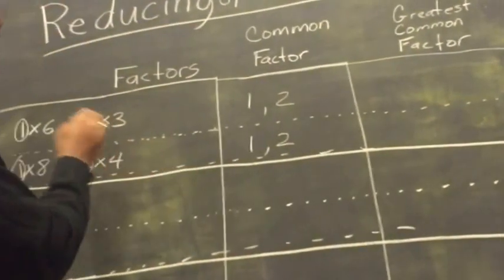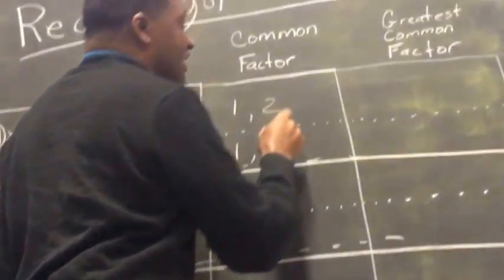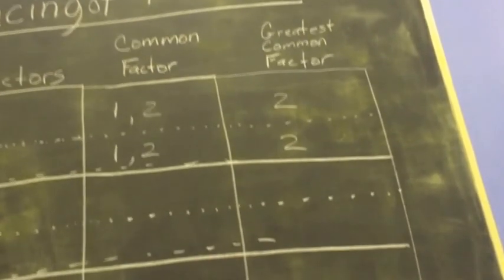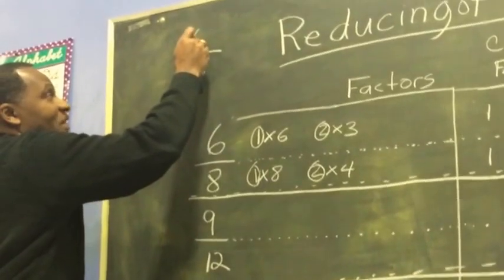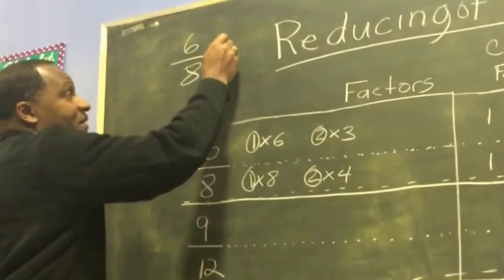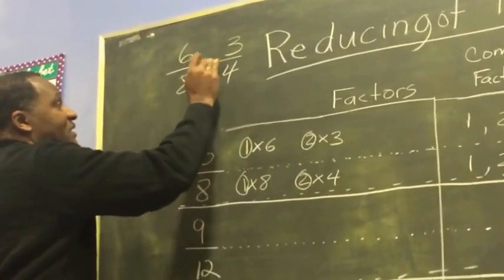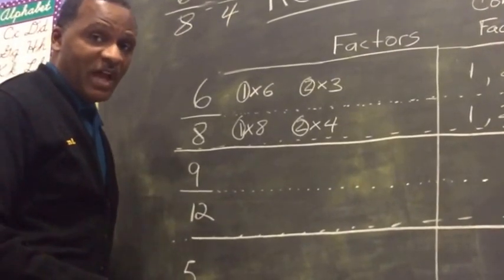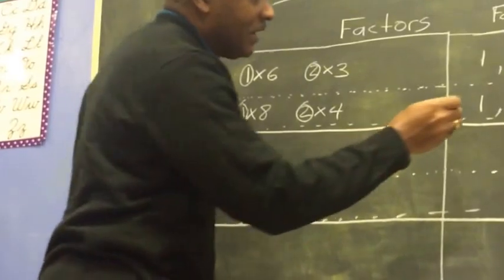To reduce the fraction 6 over 8, we need to find the greatest common factor. What is the largest number between the two common factors? It's 2. So we're going to use that greatest common factor to divide into 6 over 8. 2 goes into 6 three times, and 2 goes into 8 four times. So our reduced fraction is 6 over 8 equals 3 over 4. That's how we reduce a fraction — we find the greatest common factor.